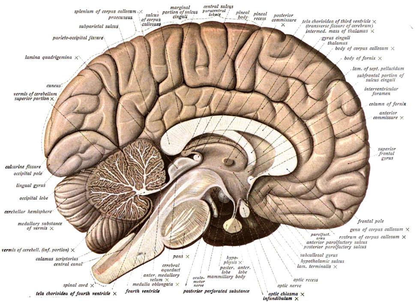Their neuroanatomy is therefore better understood. In vertebrates, the nervous system is segregated into the internal structure of the brain and spinal cord, together called the central nervous system, or CNS, and the roots of the nerves that connect to the rest of the body.